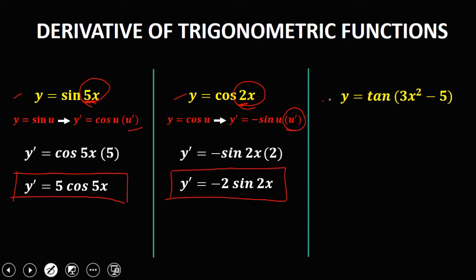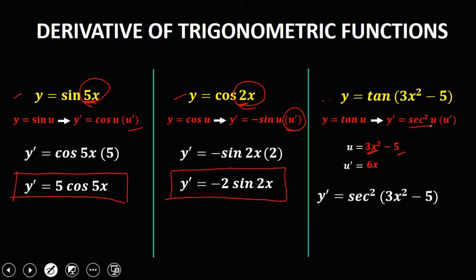For this given, y equals tangent of (3x² minus 5). Since the derivative of tangent is secant squared u times the derivative of u, our u is 3x² minus 5. The derivative of 3x² is 6x and the derivative of 5 is 0, so u prime is 6x. Therefore y prime equals secant squared(3x² minus 5) times 6x, so y prime is equal to 6x times secant squared(3x² minus 5).